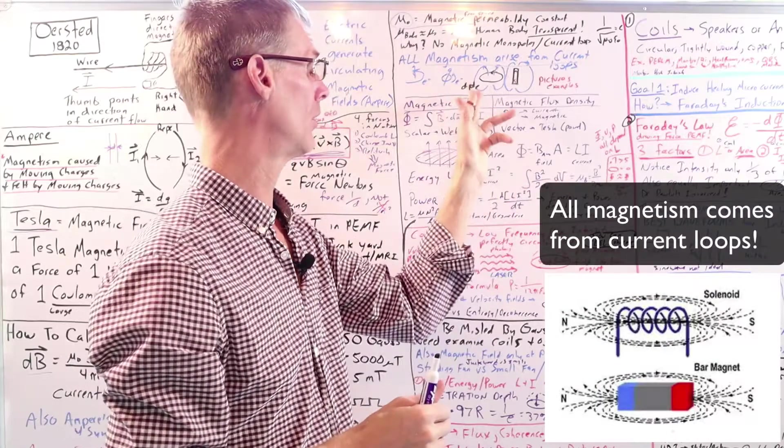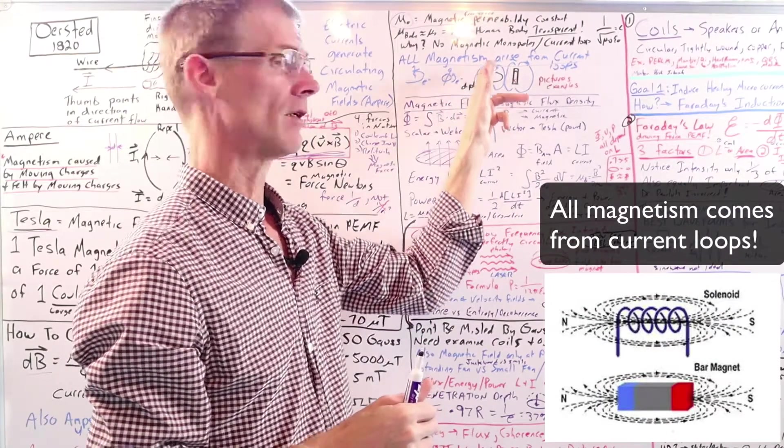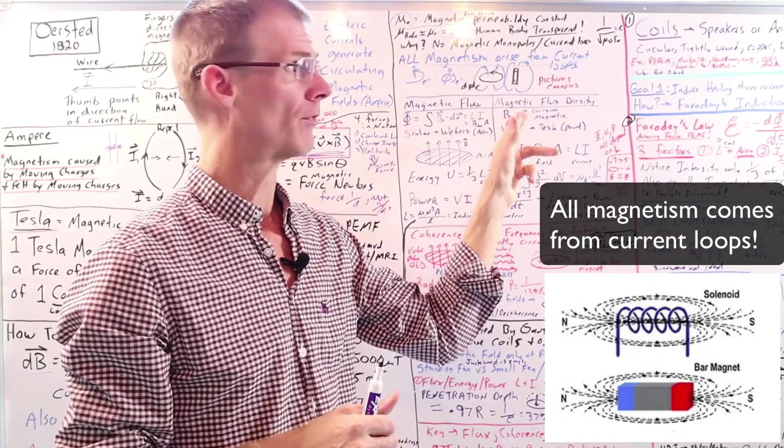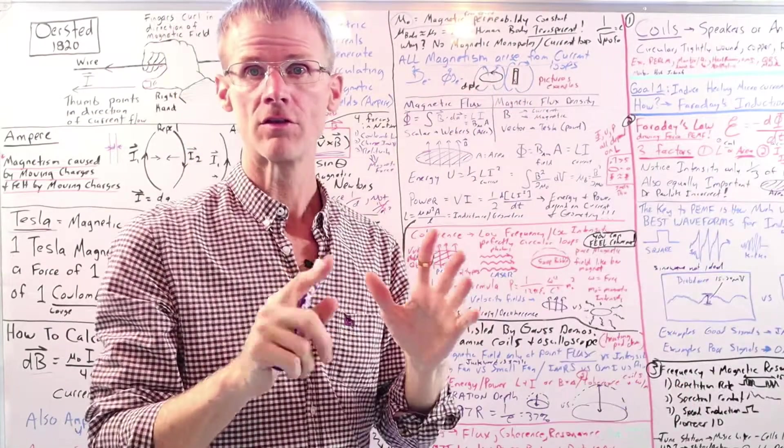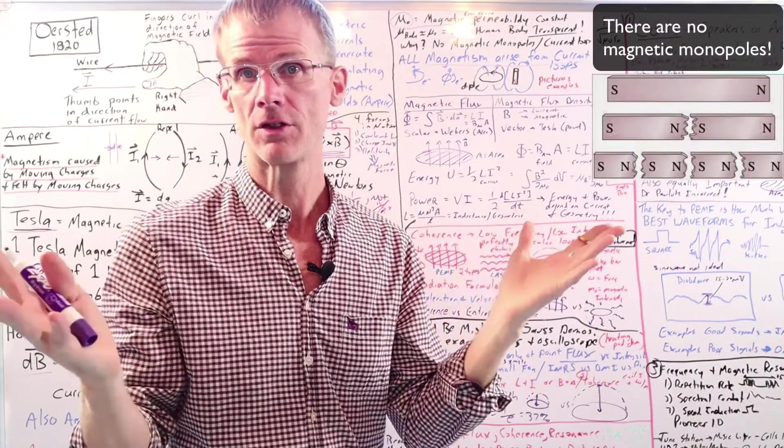So again, all magnetism comes from current loops. And these are called dipoles because magnetic fields, unlike electric fields, always come in pairs. So for example, if you take a magnet and cut it in half, you're just going to get two more magnets.